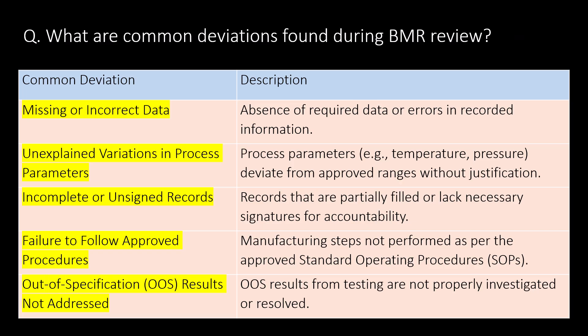Very commonly asked question: what are common deviations found in BMR review? The common deviations found in BMR review are missing or incorrect data, unexplained variations in process parameters, incomplete or unsigned records, failure to follow approved procedures, and out-of-specification (OOS) results that are not addressed.